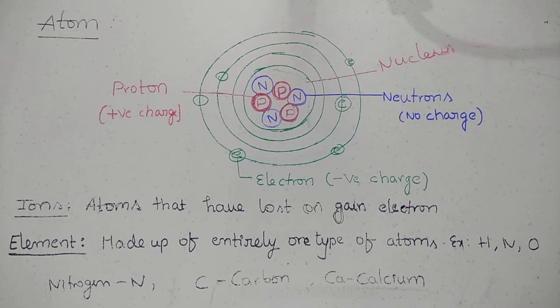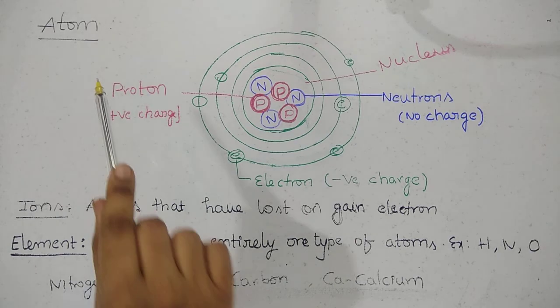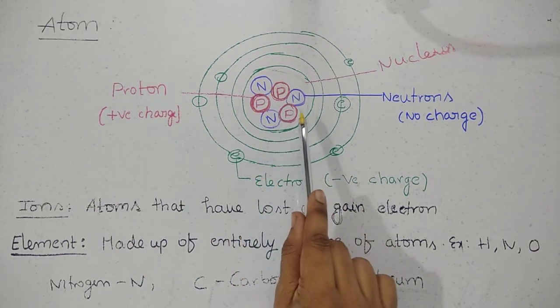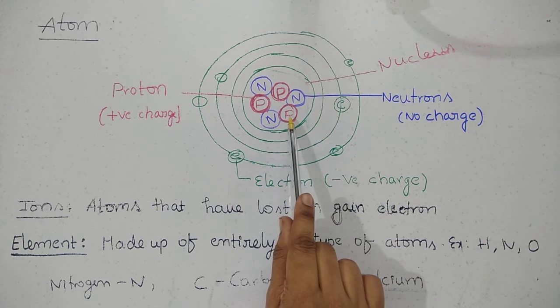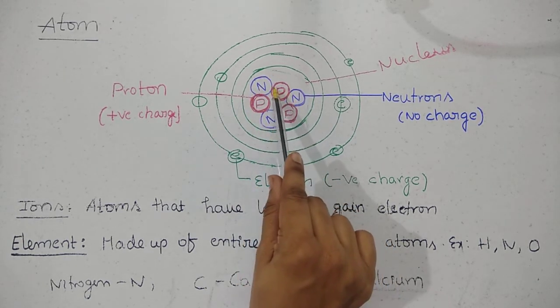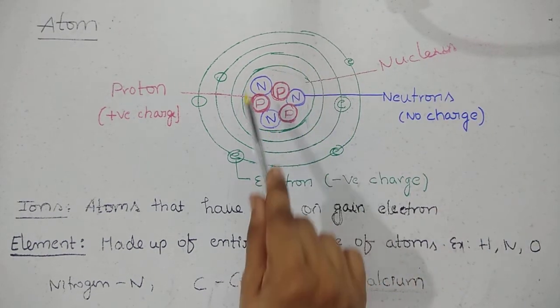Then what is atom? Atom is simply combination of three tiny subatomic particles. Those subatomic particles are proton, neutron, electron. From atom structure, we get to know that we have a centric place where neutrons and protons are placed. So this is a center place, nucleus. This is the nucleus.